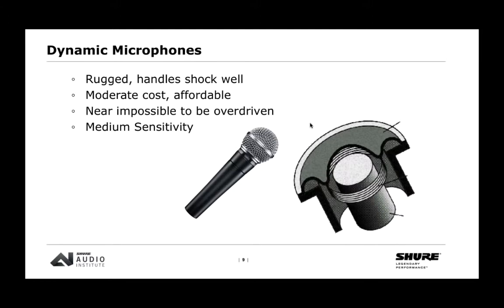Dynamic microphones are pretty simple mechanically. Looking at a cutaway of a dynamic capsule: the diaphragm on top moves a coil, and that cylindrical item is a magnet. Just like we learned in science class, when you move a magnet versus a coil, it makes a small amount of electricity. This electricity is the actual audio being captured by the microphone, which we then route, amplify, record, et cetera.